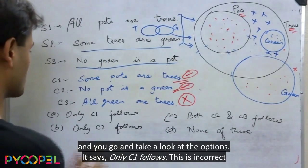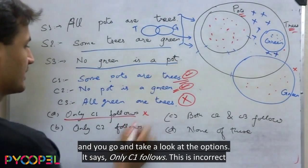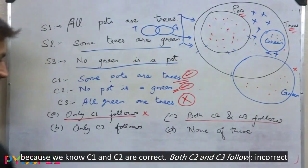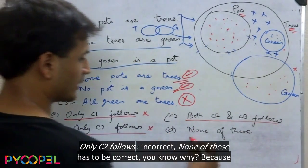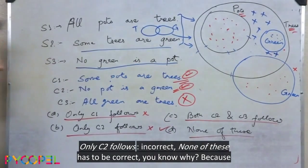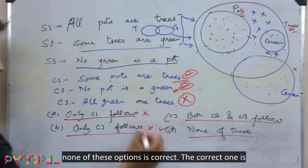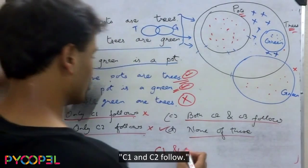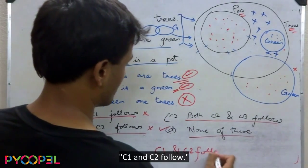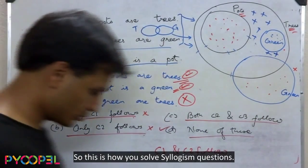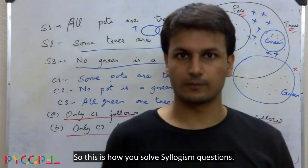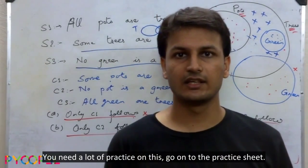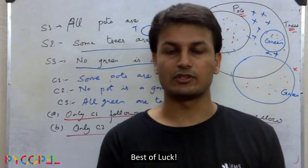Now look at the options. 'Only C1 follows' — incorrect, because C1 and C2 are both correct. 'Both C2 and C3 follow' — incorrect. 'Only C2 follows' — incorrect. The correct answer is 'C1 and C2 follow.' This is how you solve syllogism questions. You need a lot of practice — go to the practice sheet. Best of luck!